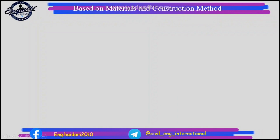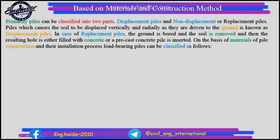Based on materials and construction method, piles can be classified into two parts: displacement piles and non-displacement or replacement piles. Piles which cause the soil to be displaced vertically and radially as they are driven into the ground are known as displacement piles. In the case of replacement piles, the ground is bored, the soil is removed, and the resulting hole is either filled with concrete or a precast concrete pile is inserted.